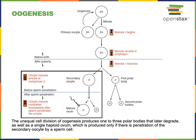However, meiosis II will also become arrested — specifically at metaphase II — and will not resume unless a sperm encounters the secondary oocyte within the uterine tube. At that point the secondary oocyte completes meiosis II, producing another polar body that removes excess chromosomes, and the secondary oocyte matures into an ovum that receives the chromosomes from the sperm cell in the process of fertilization.